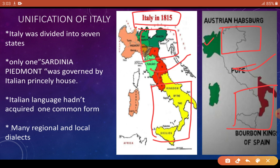In green color, this is Piedmont, and this is Sardinia — actually, Sardinia-Piedmont. Here Victor Emanuel II was ruling. He was really the only person ruling a princely house — he was the native ruler who had the right to rule. But the biggest problems in unifying Italy were Metternich and the Pope, who didn't want to unify Italy.